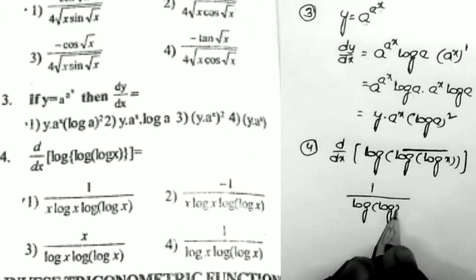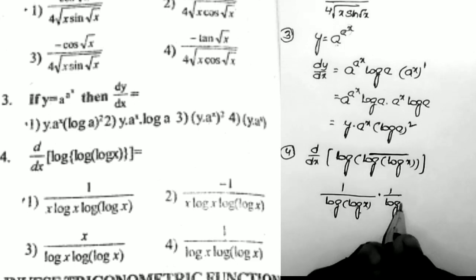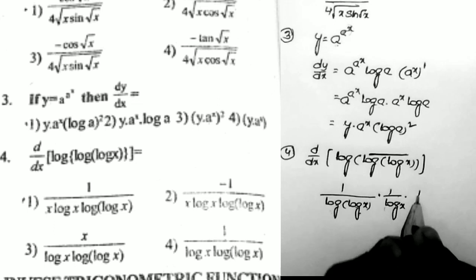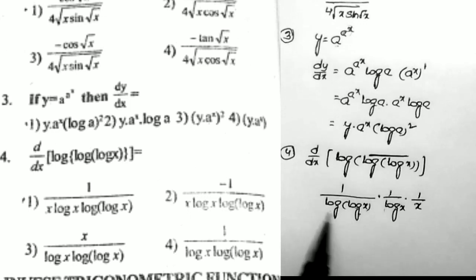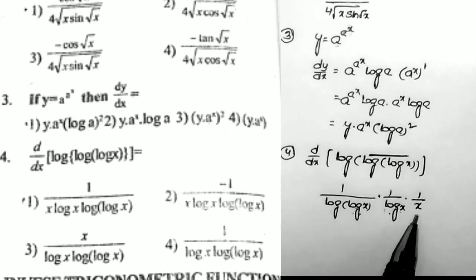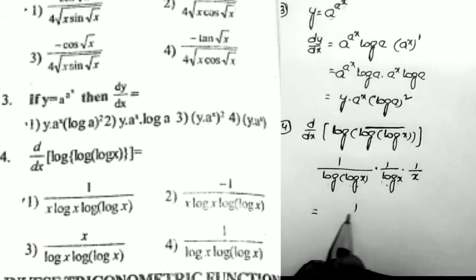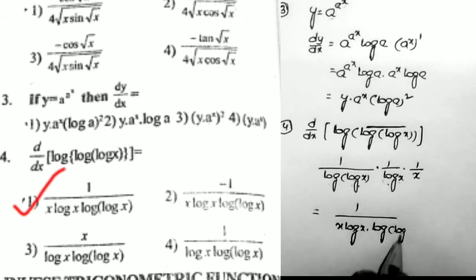Here x equals log(log x), so we take the derivative of log(log x), which is 1/(log x). Then x equals log x, and the derivative of log x is 1/x. So combining: the derivative of log(log x) gives 1/(log x) · (1/x). Therefore the full answer is 1/(x · log x · log(log x)). That is the first option.